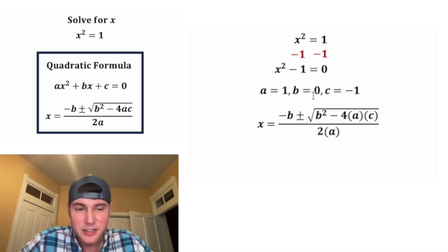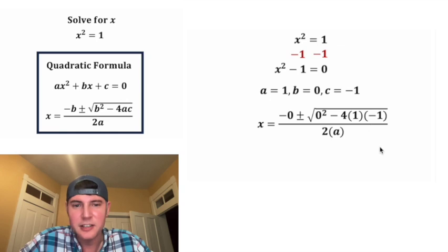Let's copy down the formula. b is 0, so I'm going to change this b into 0 and this b into 0. Now a is equal to 1, so let's change this a into a 1. And c is equal to negative 1, so let's change this c into negative 1. And then the a down here is equal to 1.